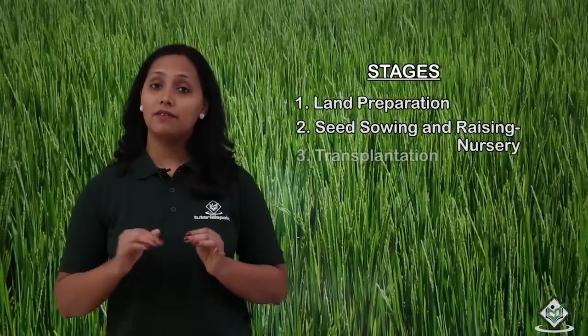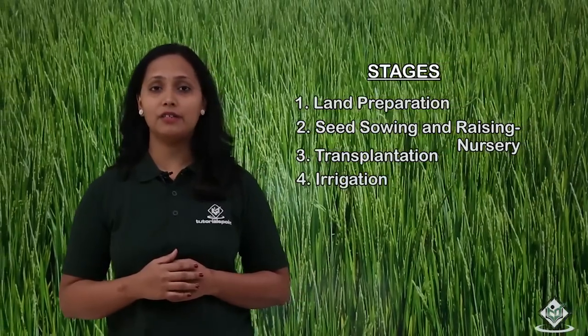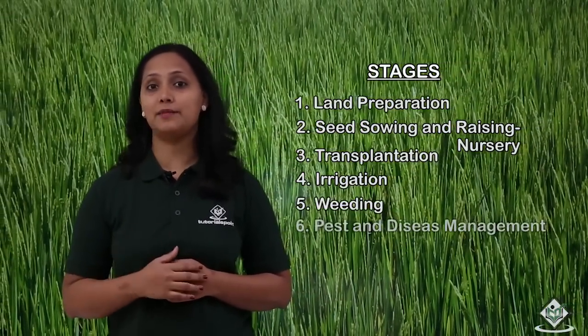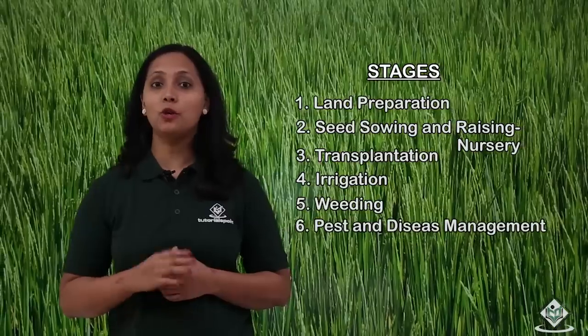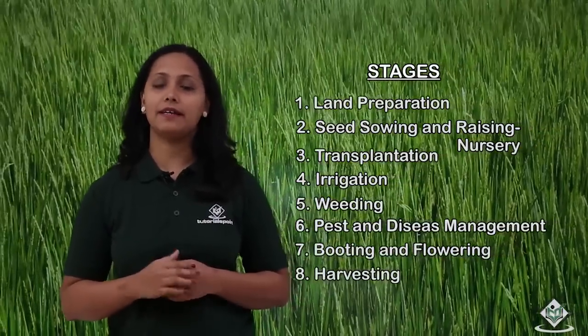Let us now see the different stages in the cultivation process of rice crop. The stages are: land preparation, seed sowing and raising nursery, transplantation, irrigation, weeding, pest and disease management, booting and flowering, and harvesting.